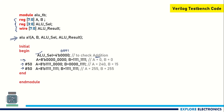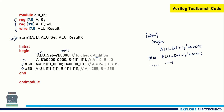If you want to check subtraction, use opcode 4'b0001. You can check all ALU operations by writing separate initial blocks and listing all opcodes from 4'b0000 up to 4'b1111 with delays between them. This gives the complete ALU result for all operations. For this simulation, I have taken only addition.